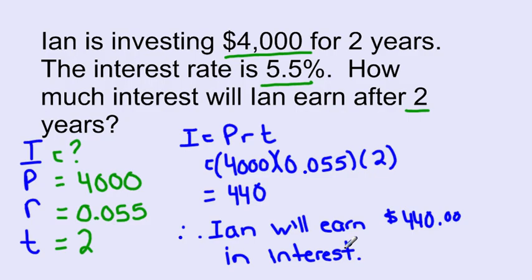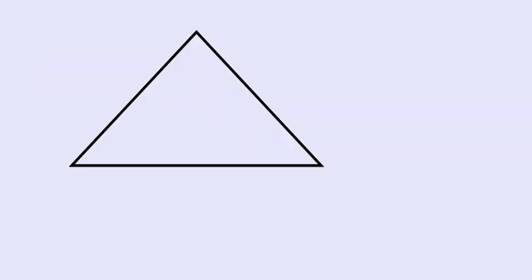Sometimes we aren't asked for the interest, but we're actually given it. So how would we solve for the other variables? We can set up a triangle that looks similar to this. I is at our top, that's interest. P for principal. R for rate. And T for time.